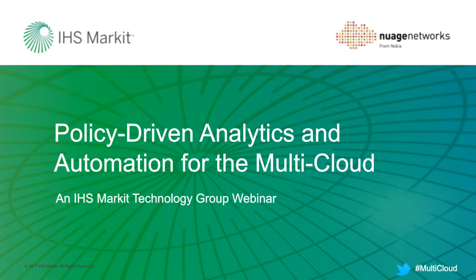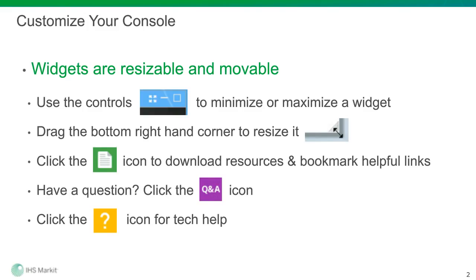Before we get started with the presentation, I want to highlight some features available on your console. You can enlarge the slide area by clicking the Maximize icon on the top right, or drag the bottom right corner of the window. You can also open, close, or resize any windows and arrange the console to suit your preference. At the bottom of the audience console there are application widgets with additional features. Make sure you check these out. One specific button to call out is the Resource List widget — the green button with a document icon — where you'll find the slide deck, a special companion report, and other support material. All documents can be downloaded right from your console.